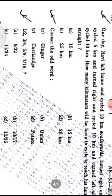Question five: Choose the odd word. Four options are given. After understanding all options: ginger, onion, and potato all grow under the soil, while only coriander grows above the soil. So option C is the correct answer.